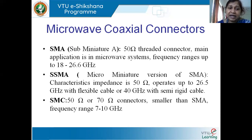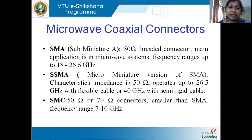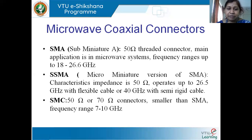Coming to the next connector, it is the SSMA connector, which is still more miniaturized compared to the SMA connector. The characteristic impedance goes up to 50 ohms and it operates from 26.5 gigahertz up to 40 gigahertz — it is flexible up to 40 gigahertz. Then the next one is the SMC connector. It has a characteristic impedance of 50 to 75 ohms, is again smaller than SMA connectors, and the frequency goes up to 70 gigahertz.